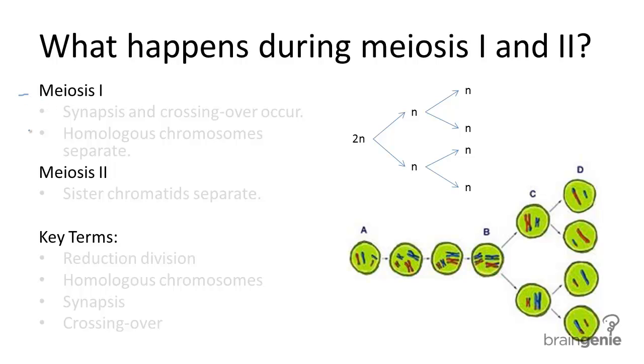Meiosis is divided into two parts: meiosis I and meiosis II, which are again divided into four phases: prophase, metaphase, anaphase, and telophase. These are the same names for the mitosis phases, but they accomplish different things.